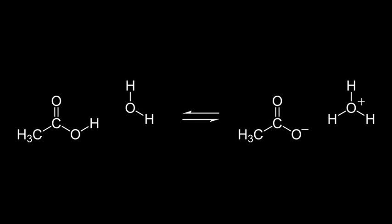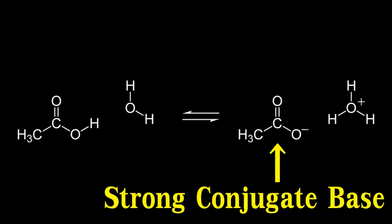For example, when the weak acid acetic acid reacts with water, it forms an H3O-plus ion and a C2H4O2 ion. The C2H4O2 ion is a strong conjugate base and has a significant effect on the pH.